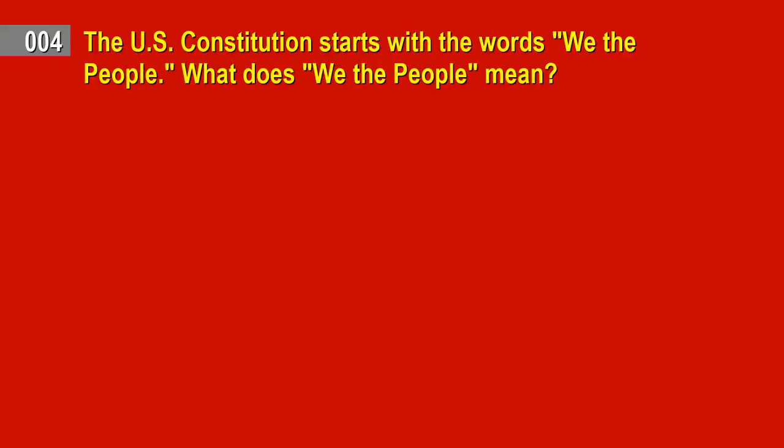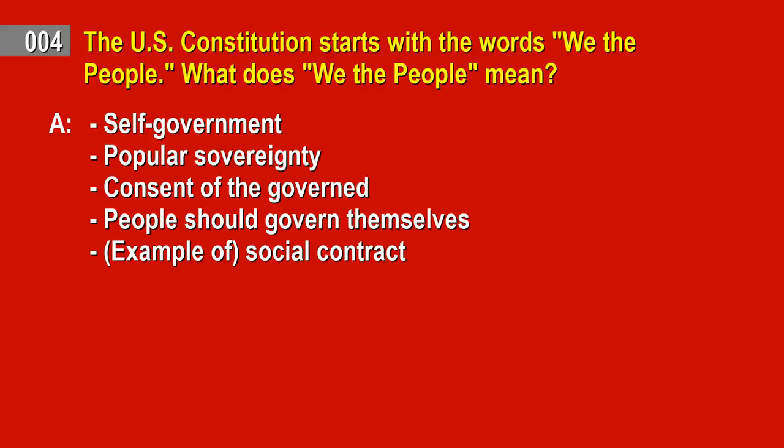Question 4. The U.S. Constitution starts with the words 'We the People.' What does 'We the People' mean? Answer: Self-government. Popular sovereignty. Consent of the governed. People should govern themselves. Example of social contract.